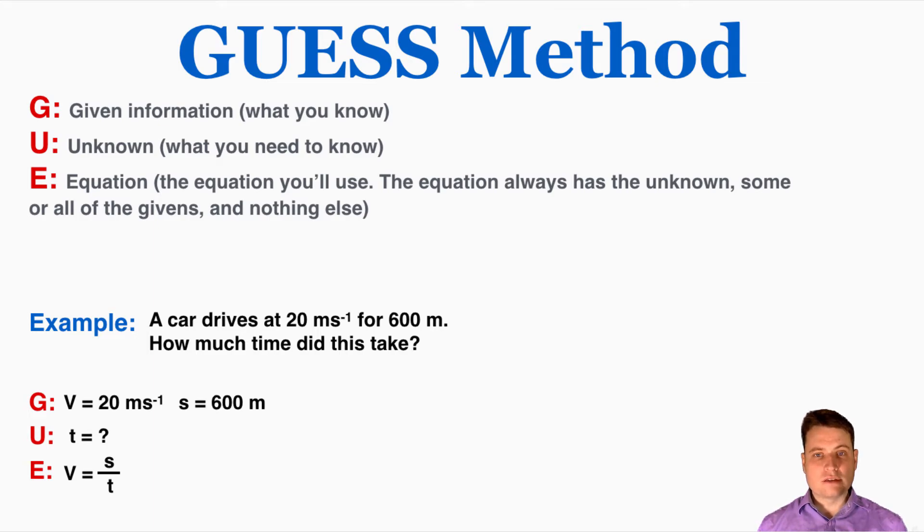A common point of confusion is that some students assume that the equation has to have the unknown on one side all by itself. They'll say like oh okay this is the equation for velocity, but where's the equation for time? But physics doesn't really work that way. Any physics equation can be used to solve for any variable inside of that physics equation.